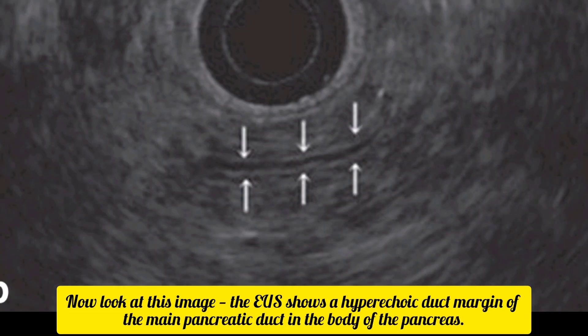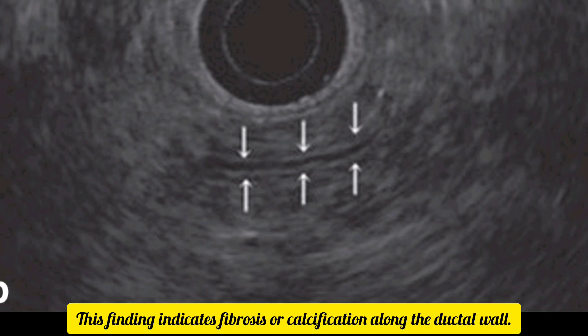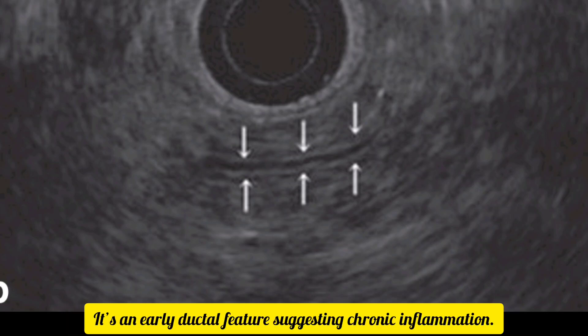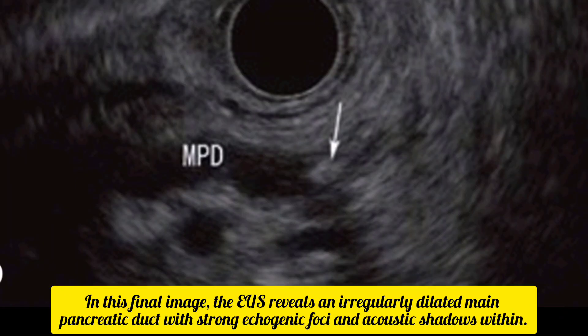Now look at this image. The EUS shows a hyperechoic duct margin of the main pancreatic duct in the body of the pancreas. This finding indicates fibrosis or calcification along the ductal wall. It's an early ductal feature, suggesting chronic inflammation.